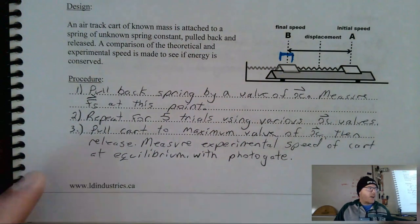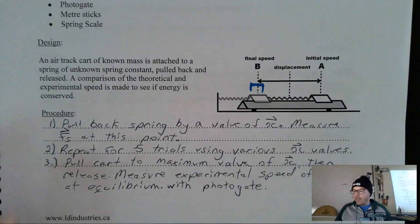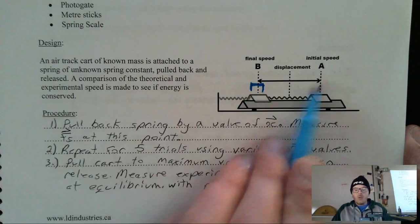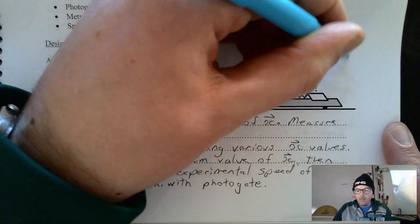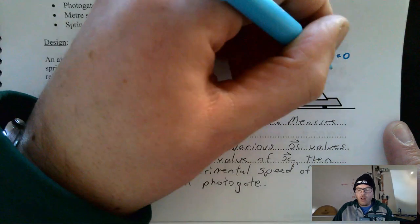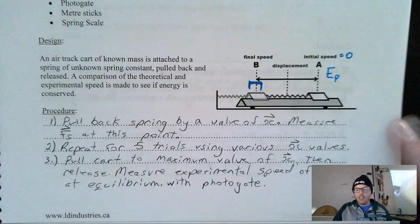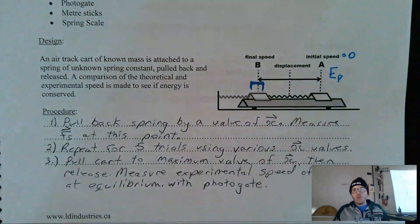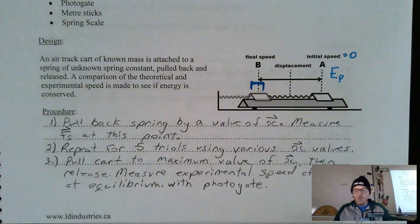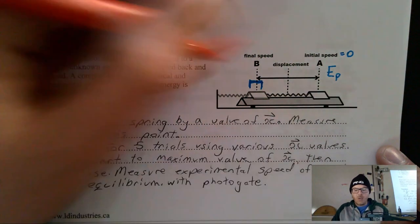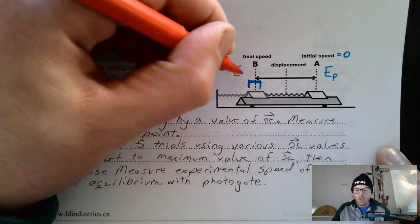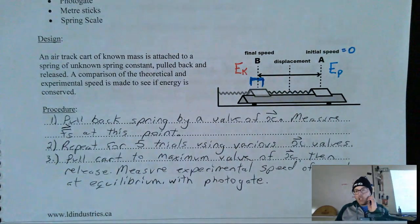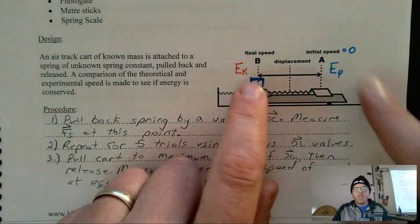Looking at the energy diagram for this lab: when the cart is pulled all the way back at the initial position, it isn't moving, so initial speed is zero. All the energy is elastic potential energy — the energy stored in a stretched spring. When the cart is released and reaches equilibrium, all of that energy turns into kinetic energy. So the analysis involves an elastic PE equals EK calculation.